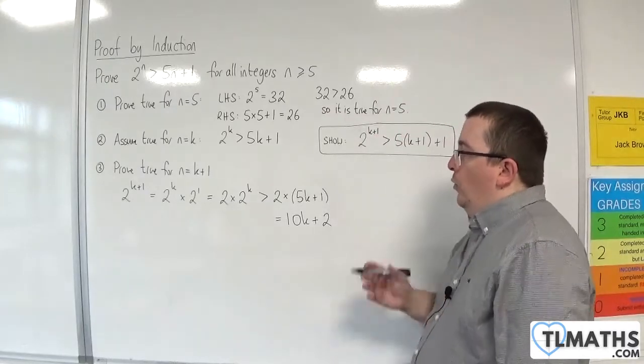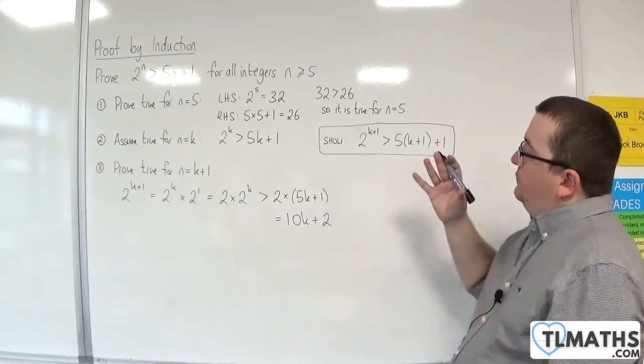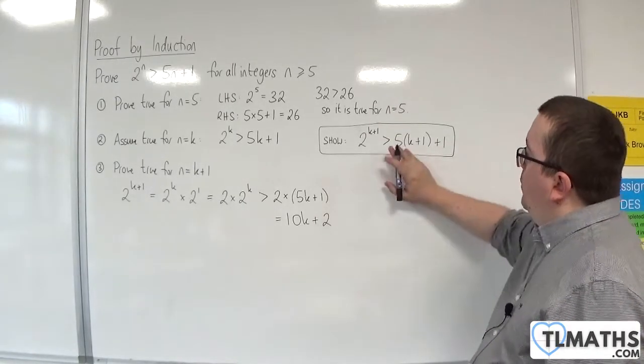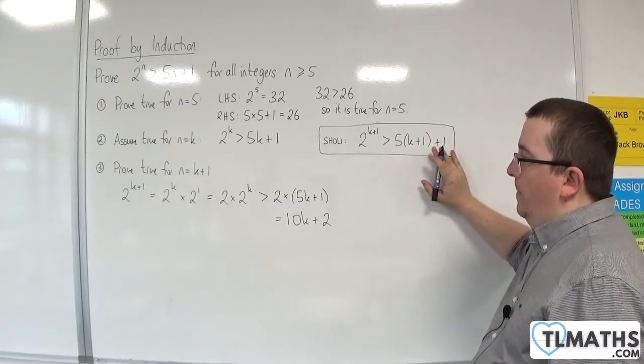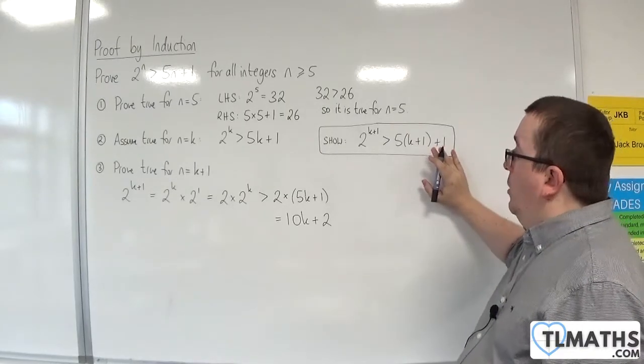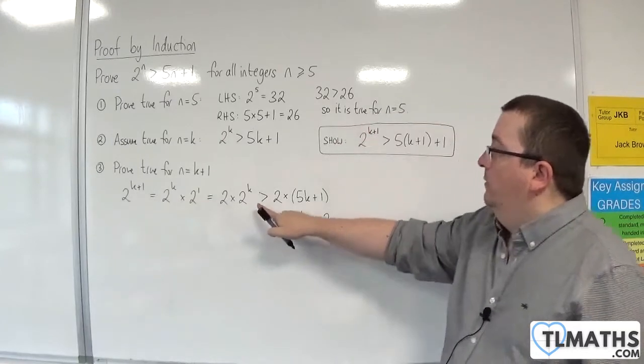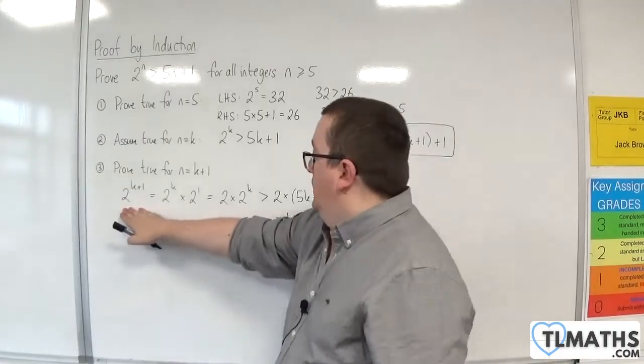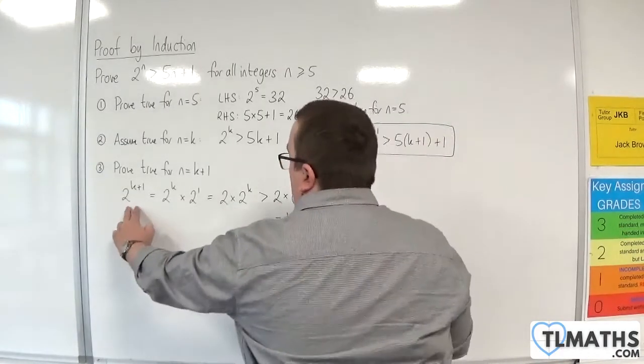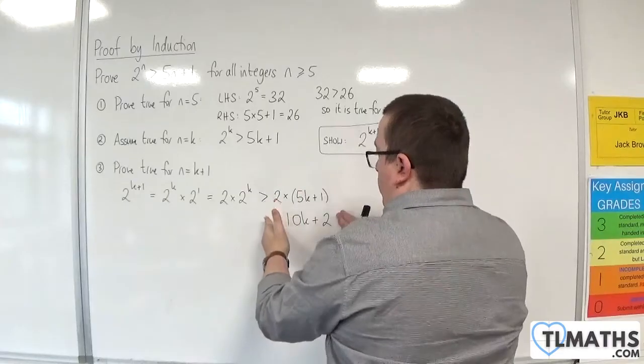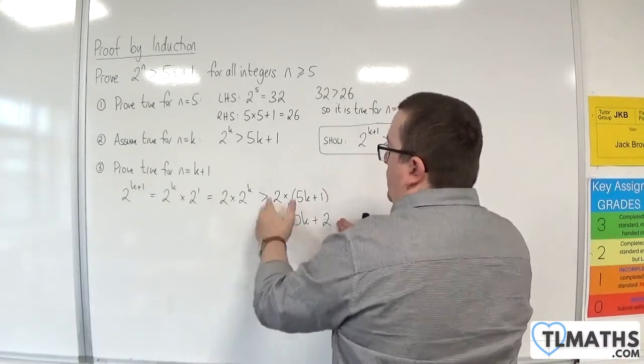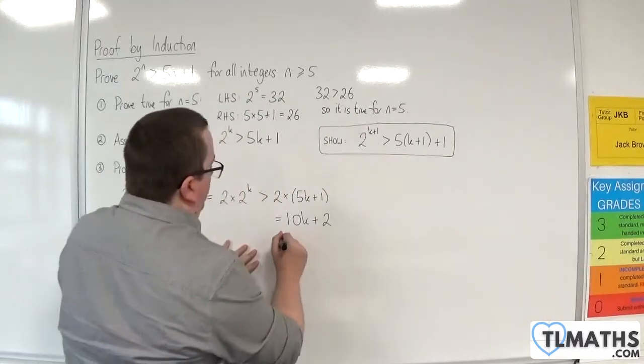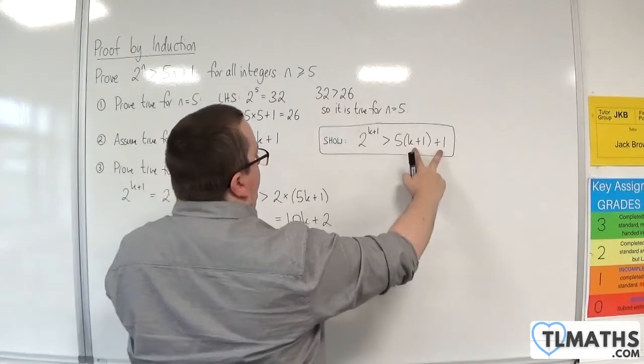Right, so, what do I want to do now? Well, at this stage, what I now need to think about is I need to think about what format I want to get it into. Because, remember, I've got 2 to the k plus 1. So, I don't need to do anything with this left-hand side. I already know that's what it is, 2 to the k plus 1. I know that that is going to be greater than this. Assuming that's true, of course.